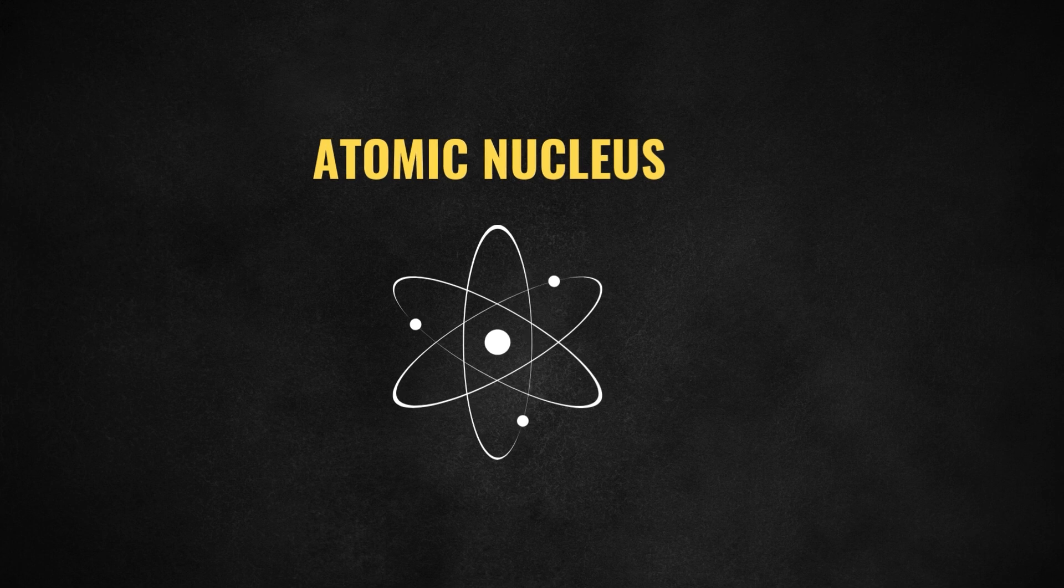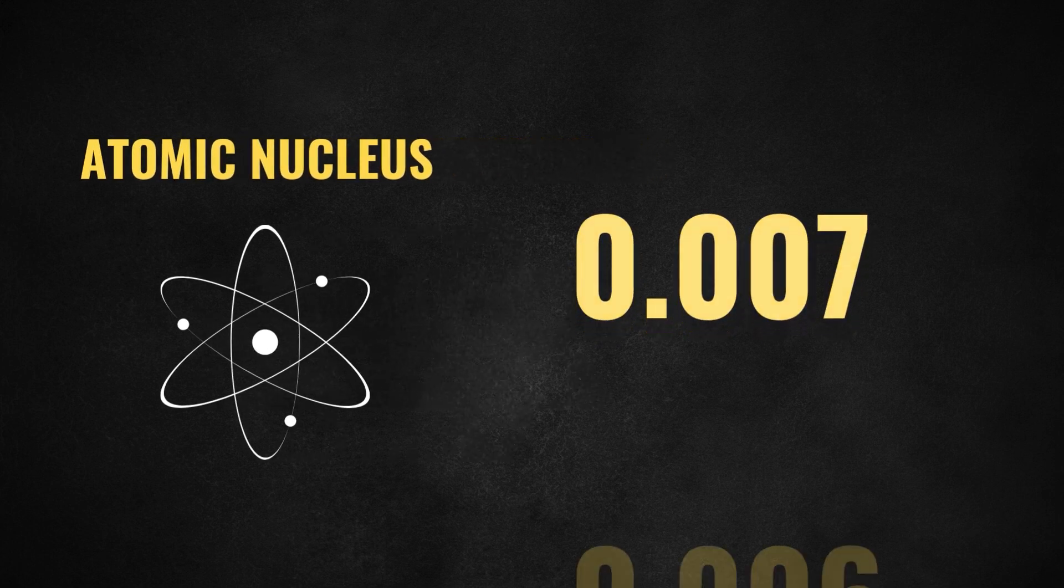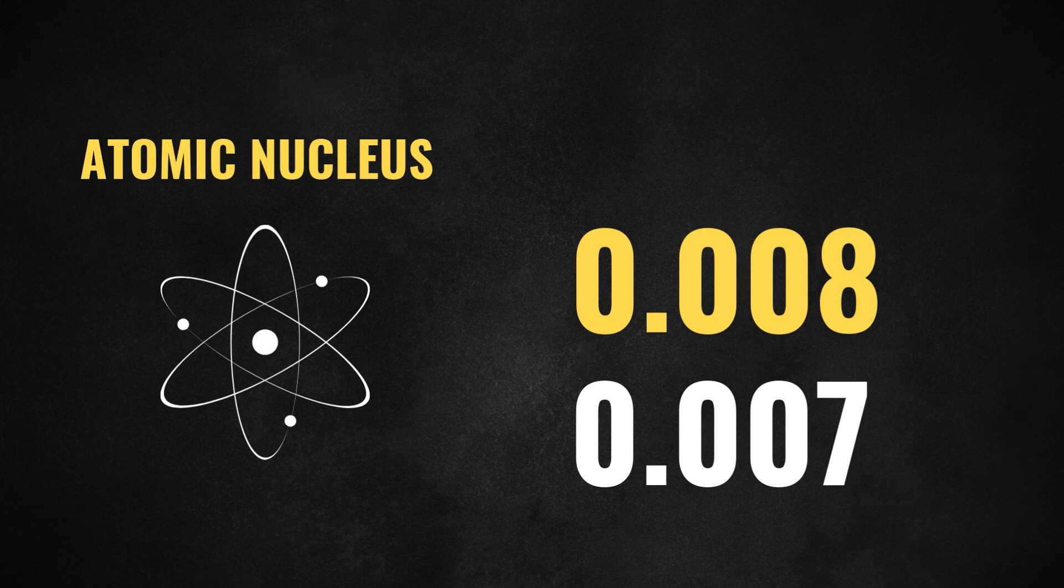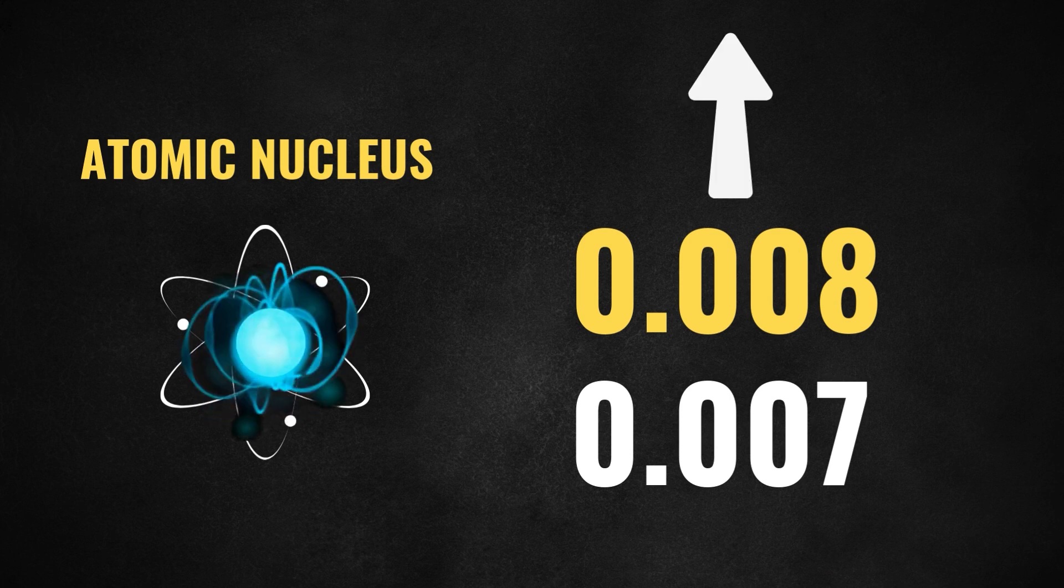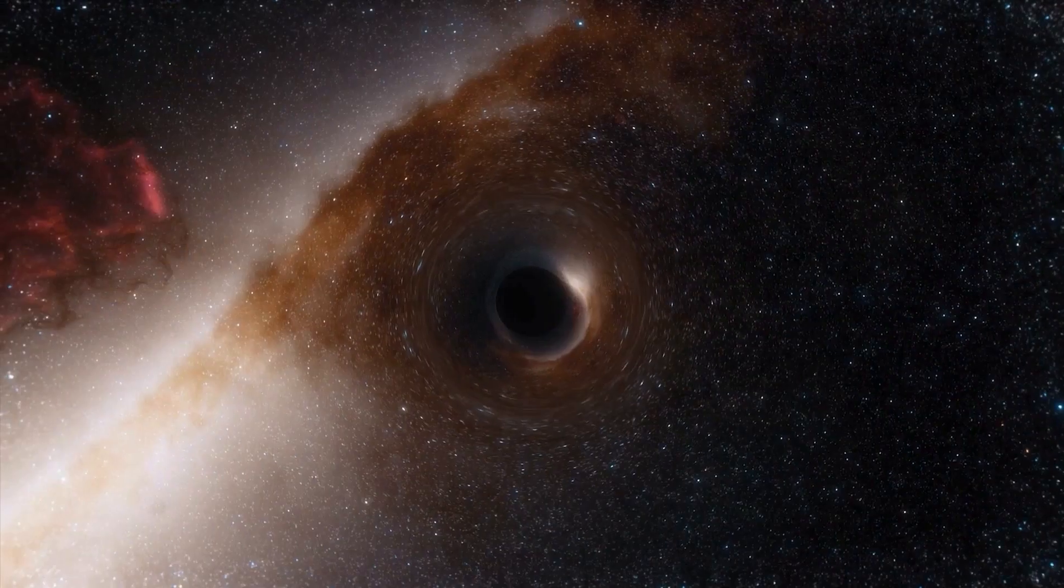For example, the force that holds the elements together in the atomic nucleus is 0.007. If this value were 0.006 or lower, only hydrogen would exist in the universe. If it were 0.008 or higher, hydrogen atoms would quickly combine and turn into heavier elements. In either case, the conditions necessary for life wouldn't have formed.